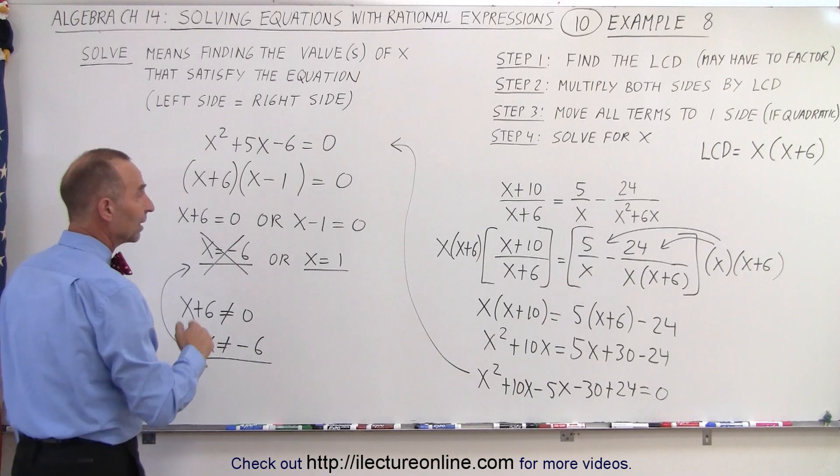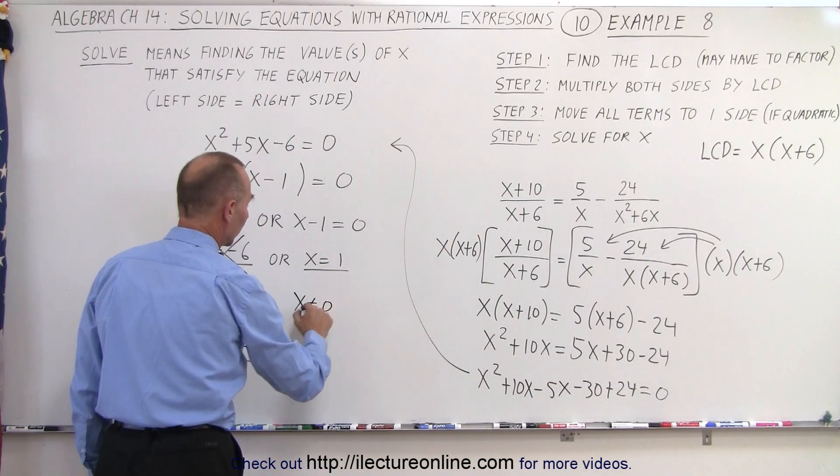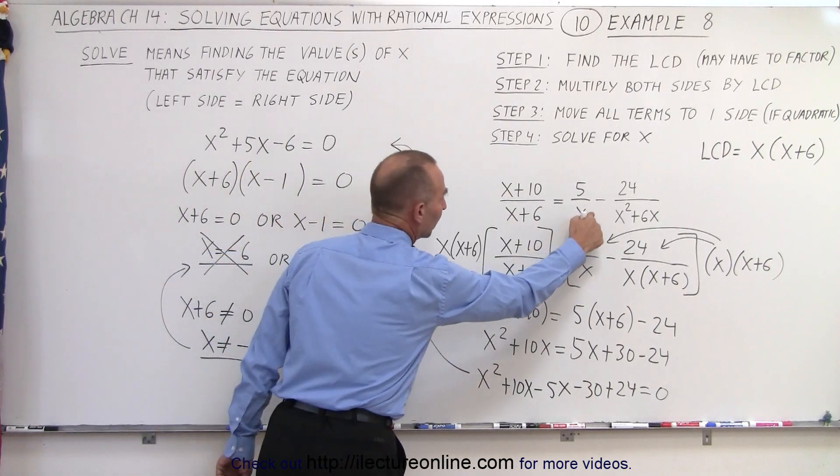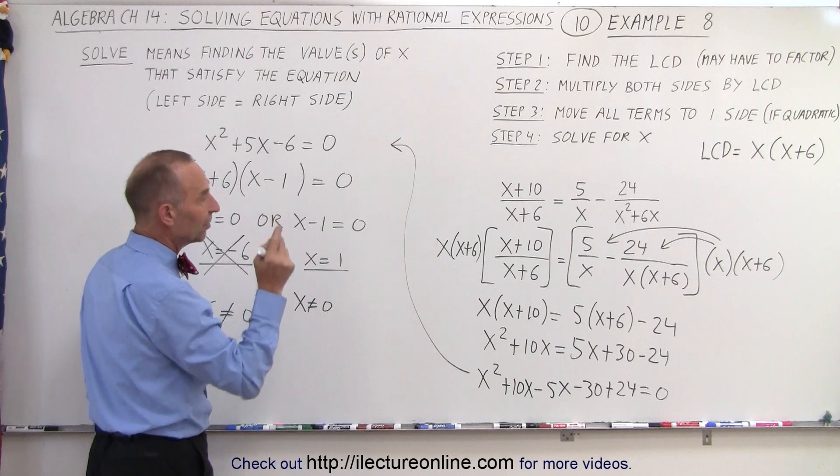The other possible value that x cannot be is x cannot equal zero, because if x equals zero then this denominator goes to zero. But that's not a problem.